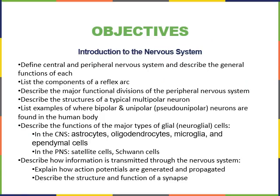We will cover the following study objectives: define central and peripheral nervous system and describe the general functions of each; list the components of a reflex arc; describe the major functional divisions of the peripheral nervous system; describe the structures of a typical multipolar neuron; list examples of where bipolar and unipolar, also known as pseudo-unipolar, neurons are found in the human body; and describe the functions of the major types of glial, or neuroglial, cells.